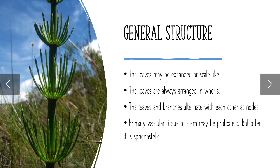The leaves may be expanded or scale-like. The leaves are always arranged in a whorl or ring form. The leaves and branches alternate with each other at nodes. The primary vascular tissue of the stem may be protostelic, but often it is siphonstelic.